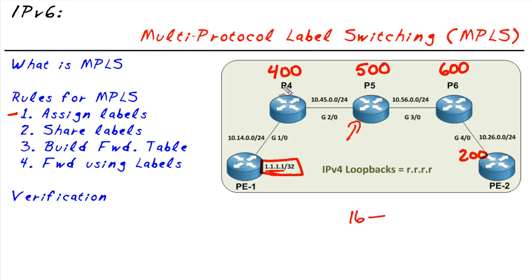For demonstration purposes, P4 chose 400, P5 chose 500, P6 chose 600, and PE2 chose the number 200 regarding this specific network.